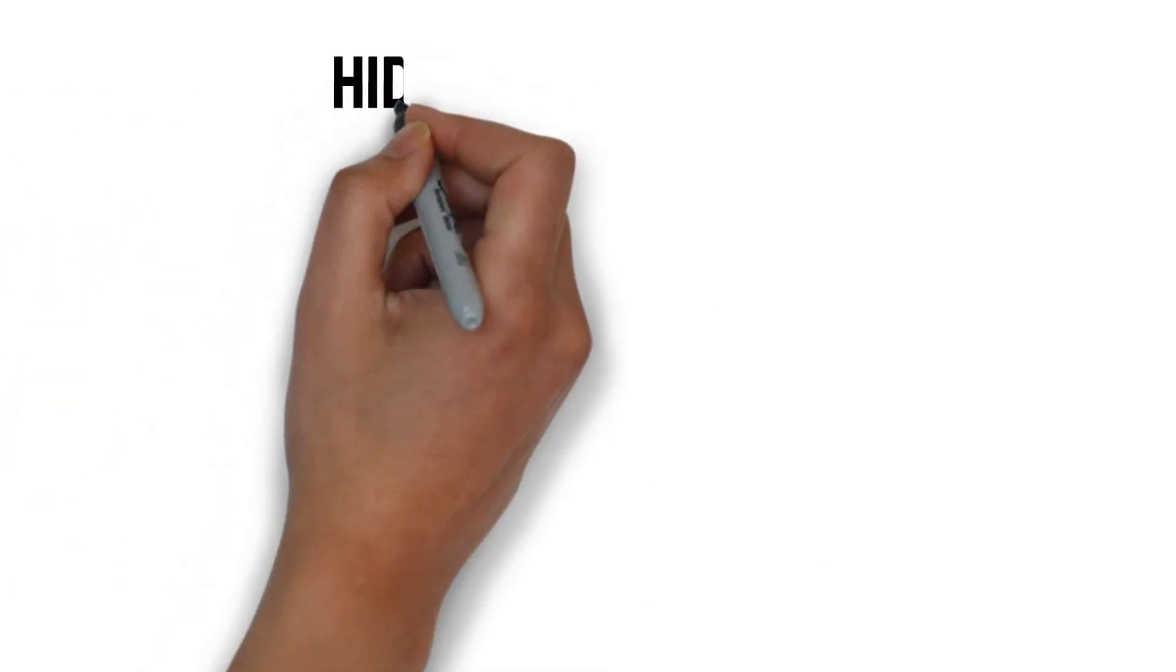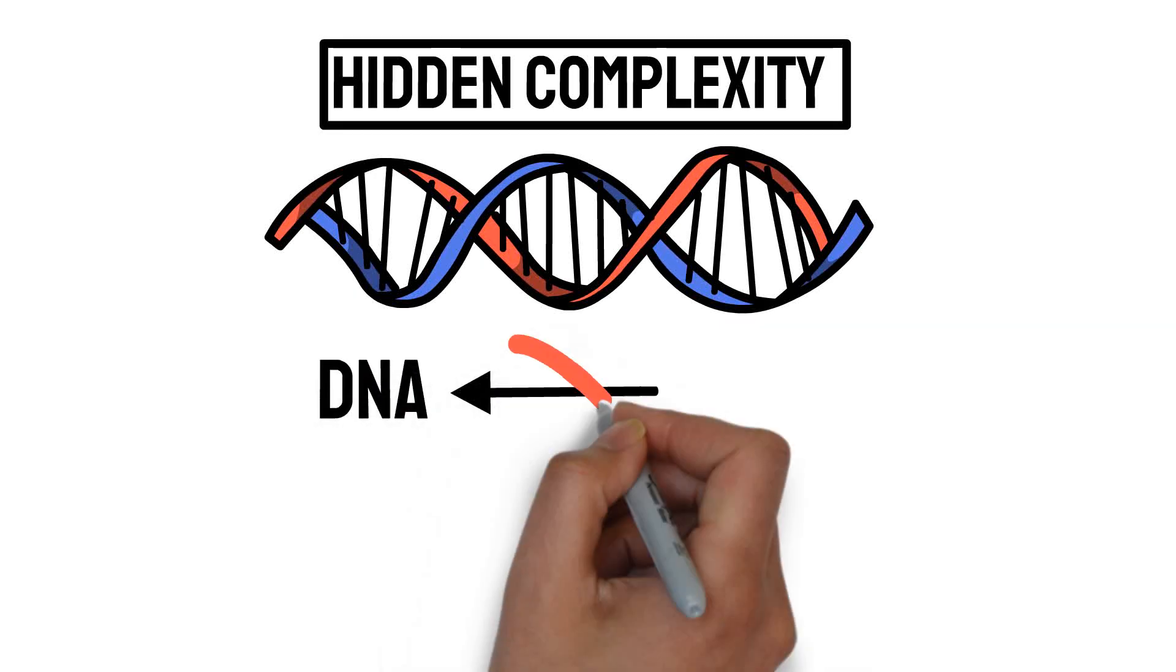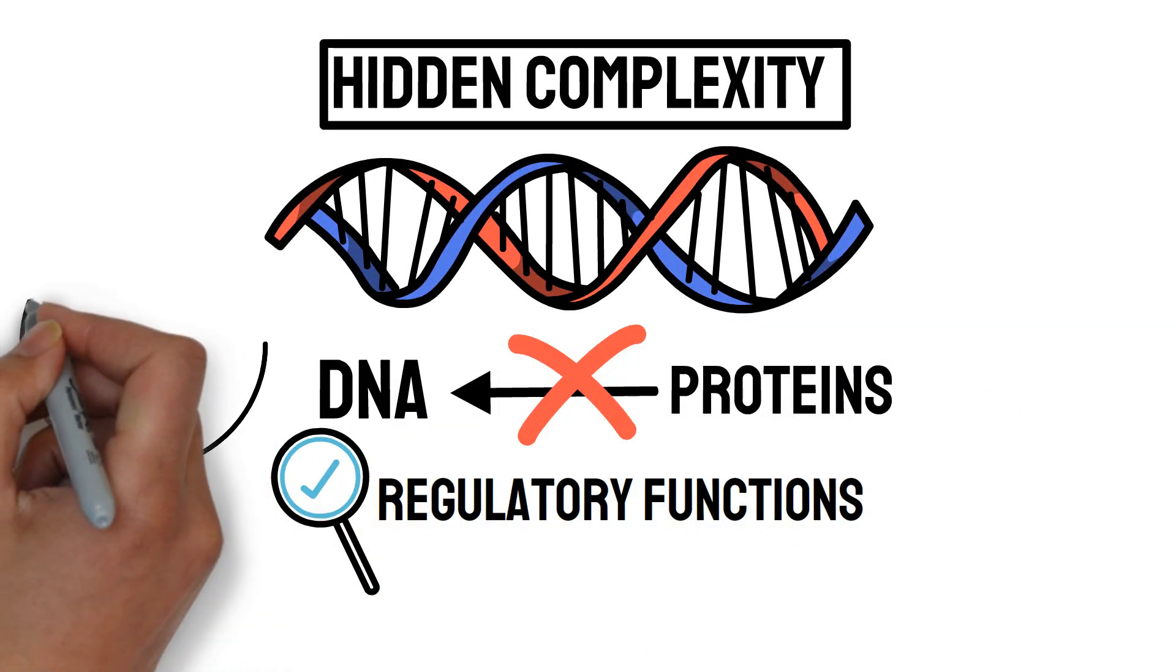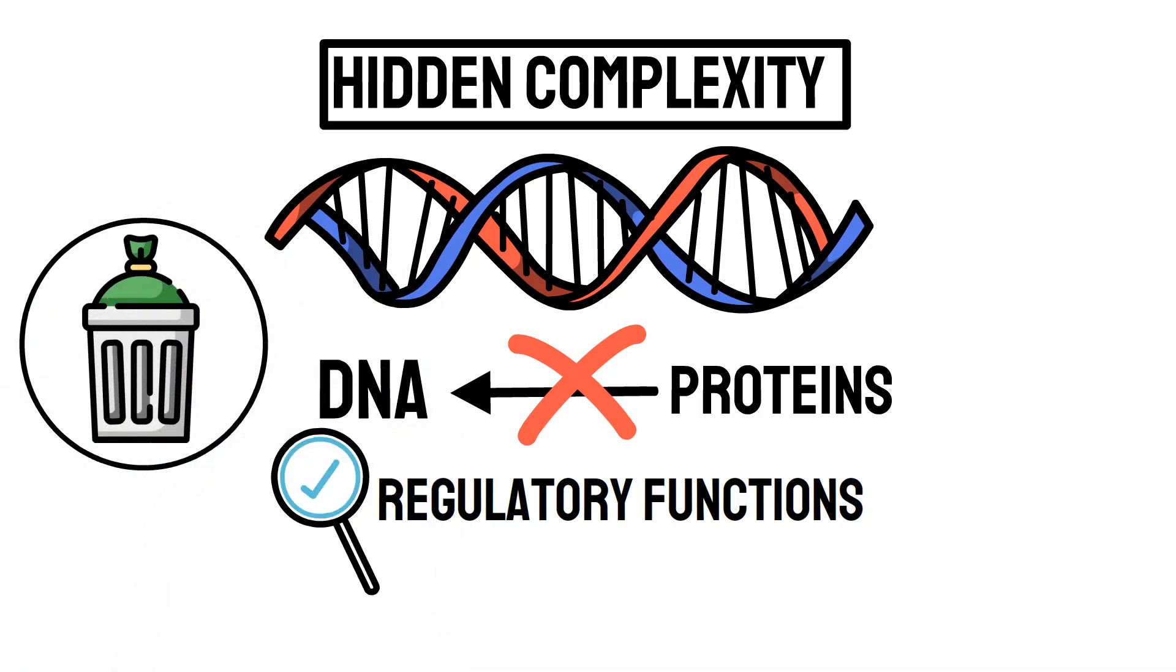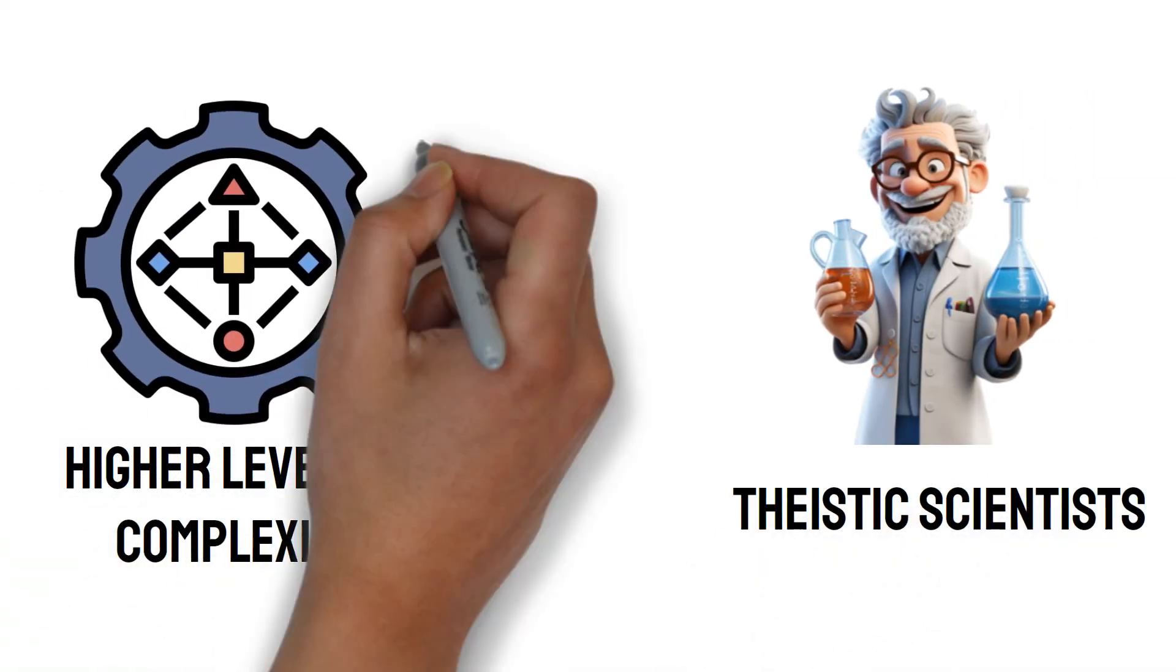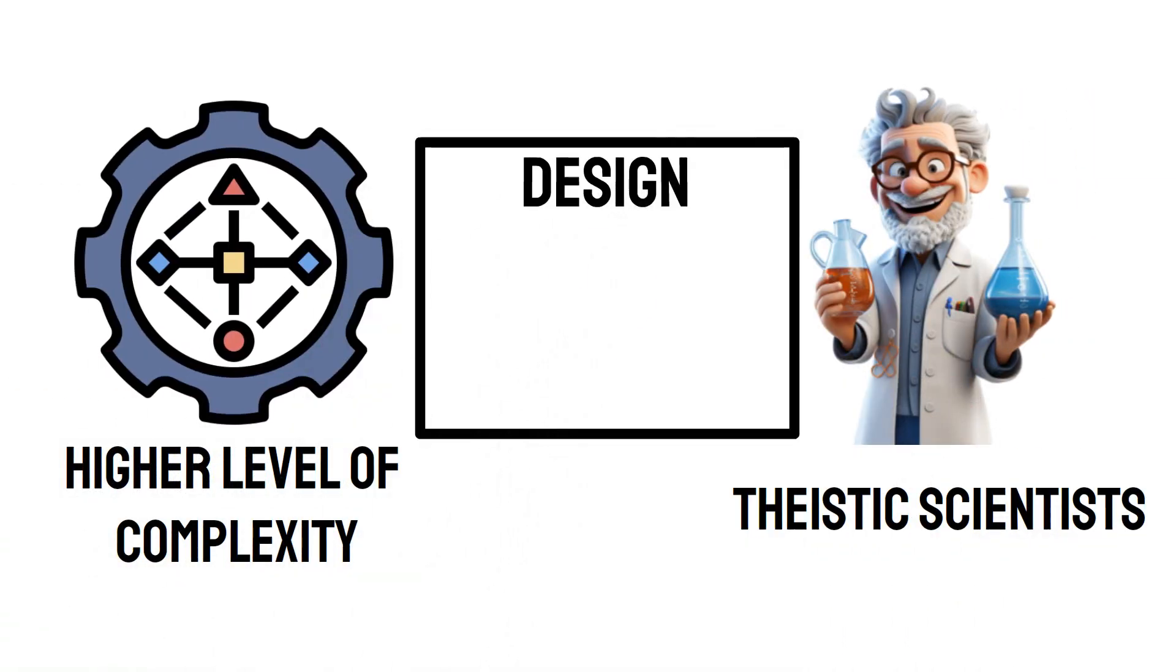Then there's hidden complexity. Even if some DNA does not directly code for proteins, the discovery of regulatory functions demonstrates that what was once considered junk is actually integral to life. This suggests a higher level of complexity, which theistic scientists argue is indicative of design rather than random mutations.